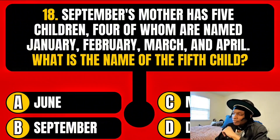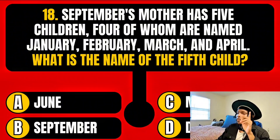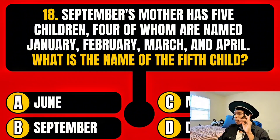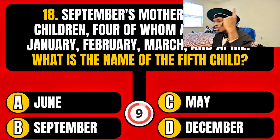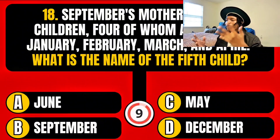September's mother has five children. Four of whom are named January, February, March, and April. What is the name of the fifth child? It is January, February, March, April... May.